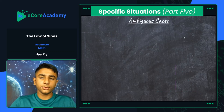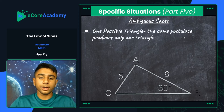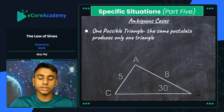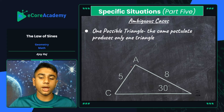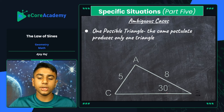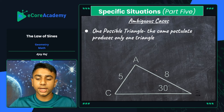For our final ambiguous case — specific situations, part five — we have one possible triangle. This occurs when the same postulate produces only one triangle. When side c is calculated under the sine function, the line does not overlap to create another right triangle. Instead, a right triangle already exists within the given triangle, going straight down the center from vertex A to the base. Side a is the hypotenuse of that right triangle, the lines overlap, and only one triangle exists.